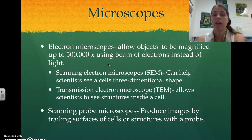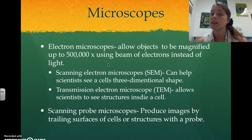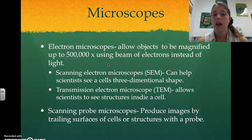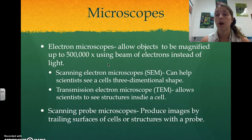There are lots of different types of microscopes. Some we won't be using in here would be the electron microscope, which allows objects to be magnified up to 500,000 times and uses electrons instead of light. There are two types: scanning electron microscopes, which allow us to see a three-dimensional shape of cells, and transmission electron microscopes, which allow scientists to see the structures inside of the cell. Scanning probe microscopes produce images by trailing surfaces of cells with probes, allowing us to find the shapes of things based on how the probe reacts.